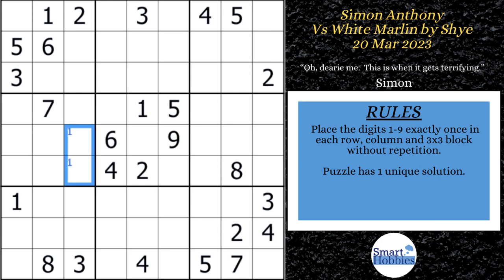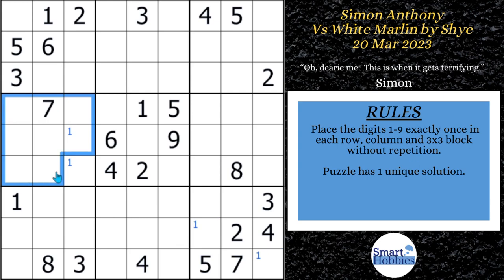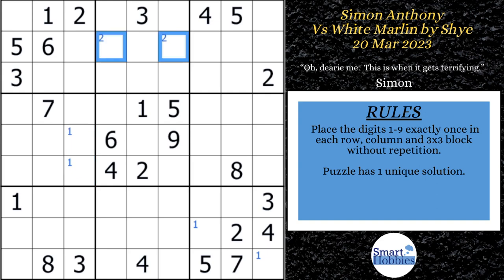Simon starts out with some Snyder notation. He notices only two places for one in block four, two places for one in block nine, then moves on to the twos. In case you're not familiar: in Snyder notation, any time a three-by-three block has only two possibilities for a candidate, you mark those. If you solve one of those cells you can immediately solve the other. Simon is testing to get clues, not expecting much early on because this is a difficult puzzle.